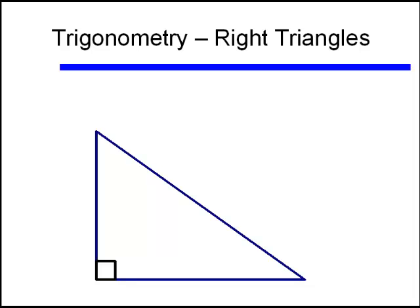We also call the sides of the right triangle certain names. The side opposite the 90 degree angle is called the hypotenuse. The other two sides are called the legs of the right triangle.